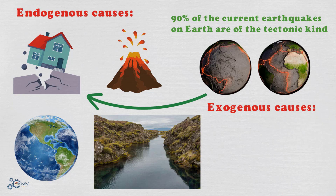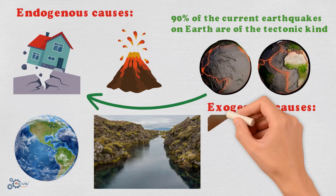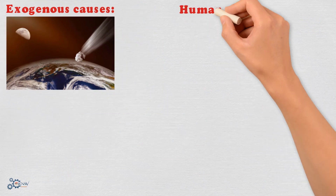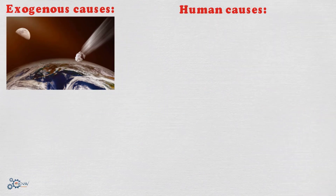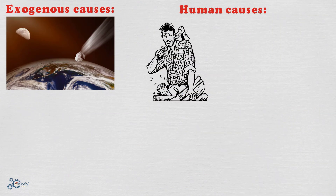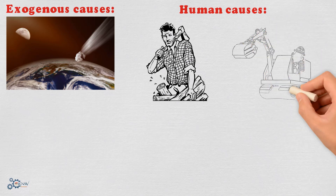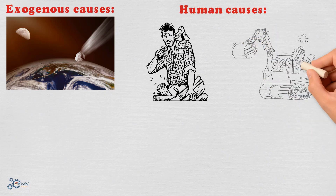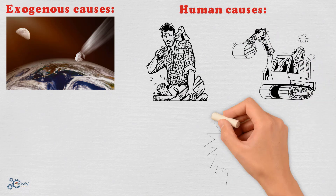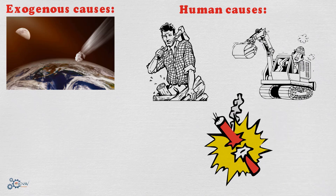Exogenous causes include earthquakes caused by meteorites hitting the Earth. Human causes include human activity such as unintentional or intentional agitation in surveying, mining and construction, especially underground nuclear tests.